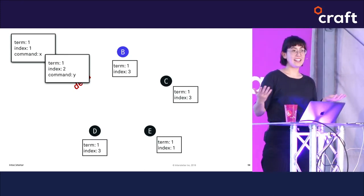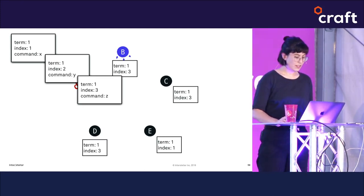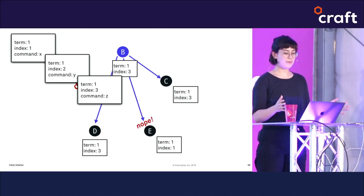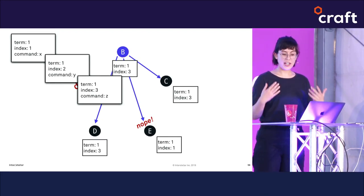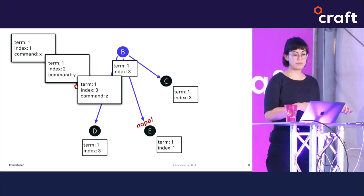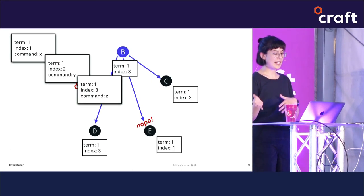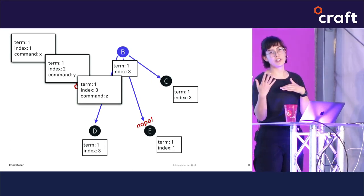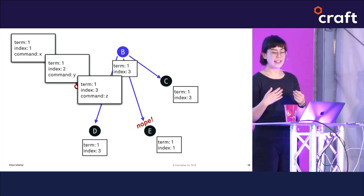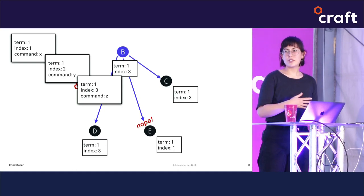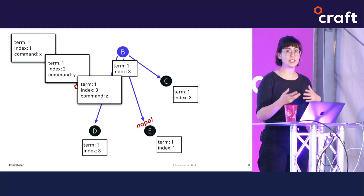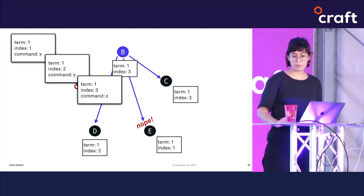Node B tries to send out a message at index 3 with command Z. Node E will reject that message since the highest committed index of 3 is missing from its log. This rejection causes node B to broadcast the messages from after index 1 and index 2 back to node E so it can apply the changes and catch up. Once this whole process is done, we've maintained consistency even after major hiccups like a leader failing during a network partition.